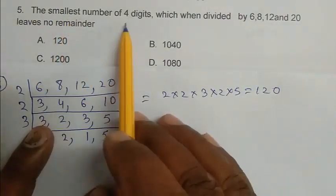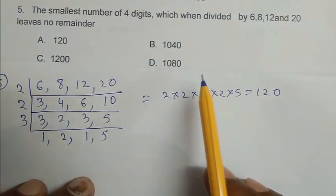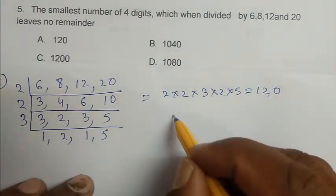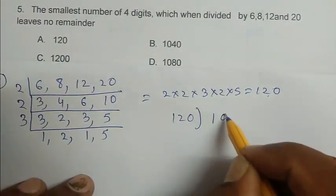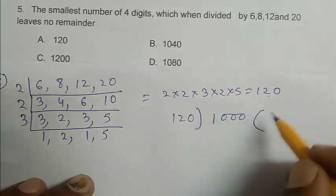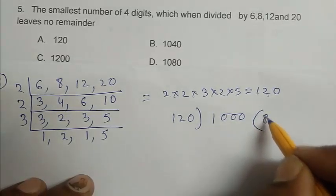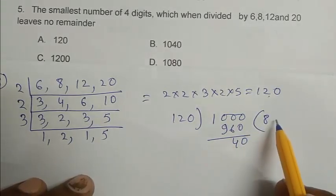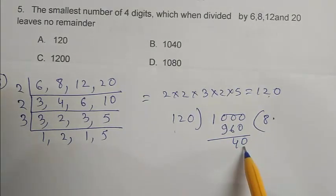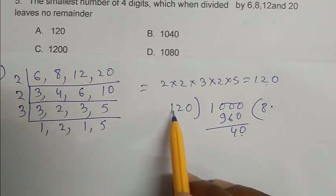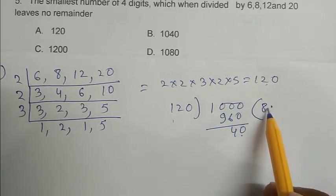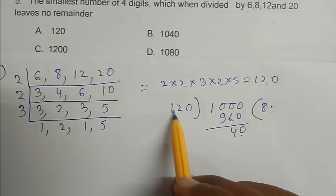We calculate this smallest 4 digit number which is divisible by this number. So we have to divide smallest 4 digit number by 120. So 120, smallest 4 digit number that is 1, 2, 3, 0. So 8. If we divide we get the quotient 8 and remainder 40. So we have to multiply 120 by 9.